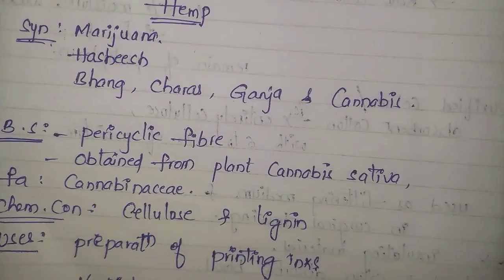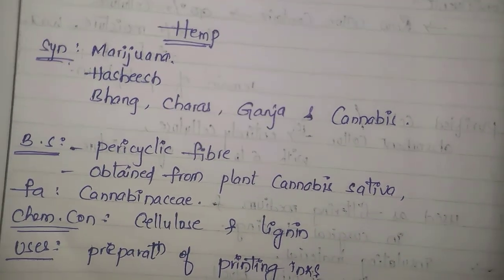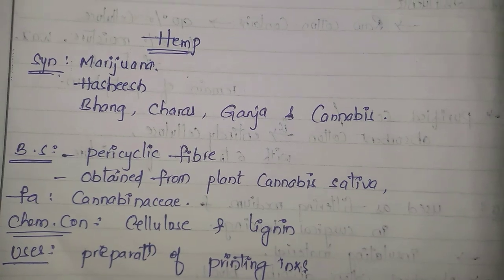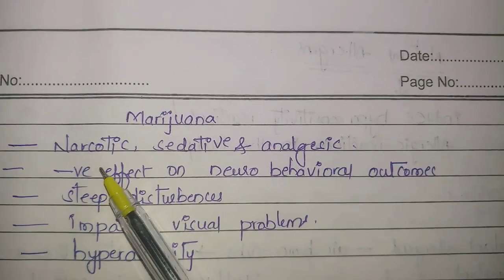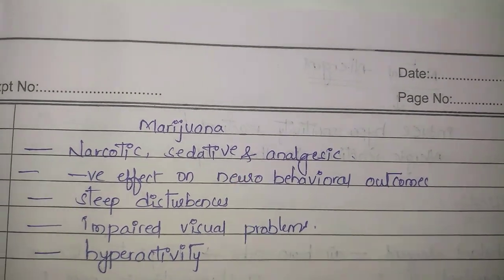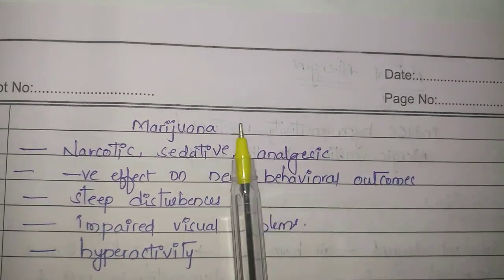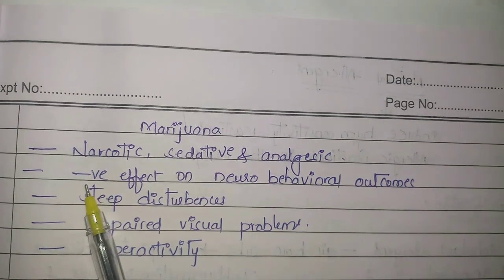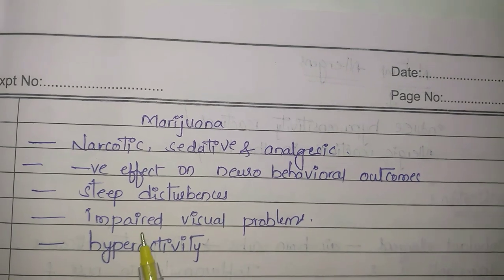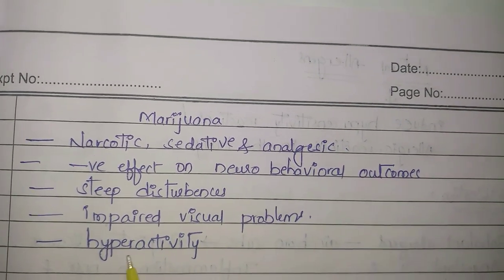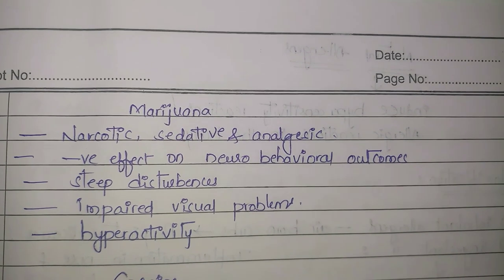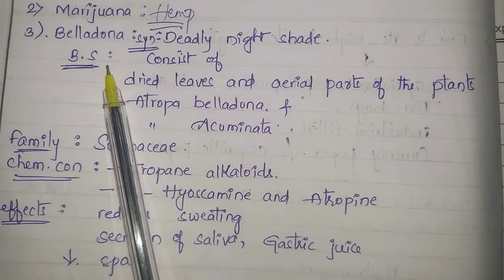Marijuana also contains cannabidiol, cannabinol, and cannabigerol. Its effects include narcotic, sedative, and analgesic effects, mental disturbances, euphoria, and it is addictive in nature. It also has negative effects on neurobehavioral outcomes, causes sleep disturbances, impaired visual problems, and hyperactivity. The third hallucinogen is belladonna.